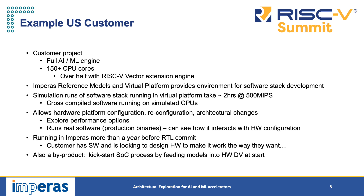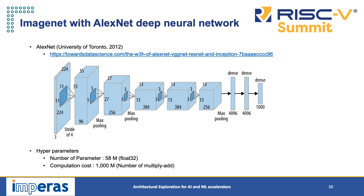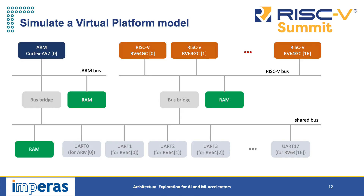Another example is a Japanese partner implementing the AlexNet algorithm. Their platform has 17 64-bit RISC-V cores with vectors and an ARM Cortex-A57 to control and communicate with them. The AlexNet neural network algorithm has a tremendous amount of computation — a billion MACs to do an analysis — and it's split into several different layers. The partner has split the convolution layers onto different cores to parallelize the performance.